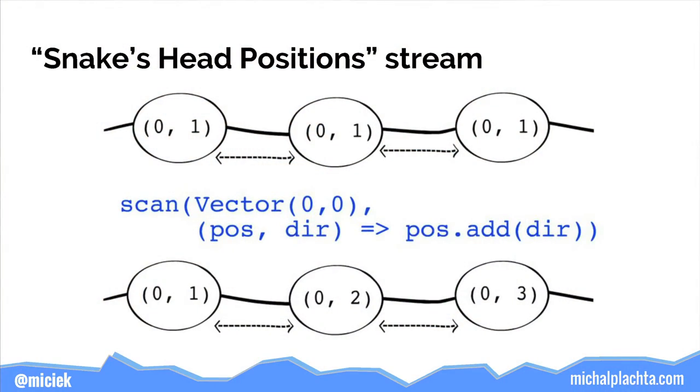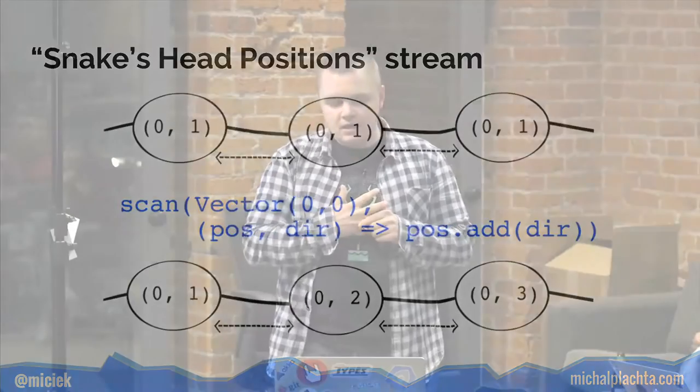We can use this direction stream to create the snake's head position stream using the second operator: scan. Scan accumulates a value using a provided function. It starts with vector (0, 0) as the starting position, then accumulates position using vector addition. Every time there is a new direction element in the input stream, we accumulate it, and each time the accumulator changes, we output it. The bottom stream is the snake's head position.